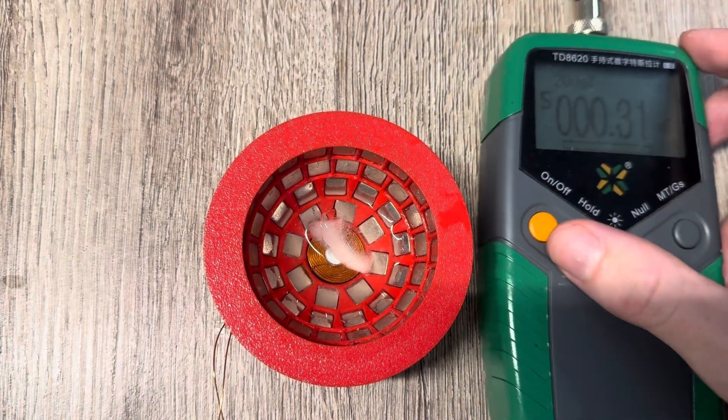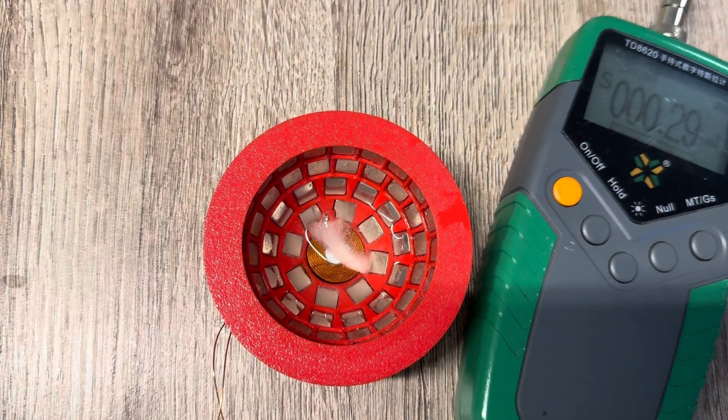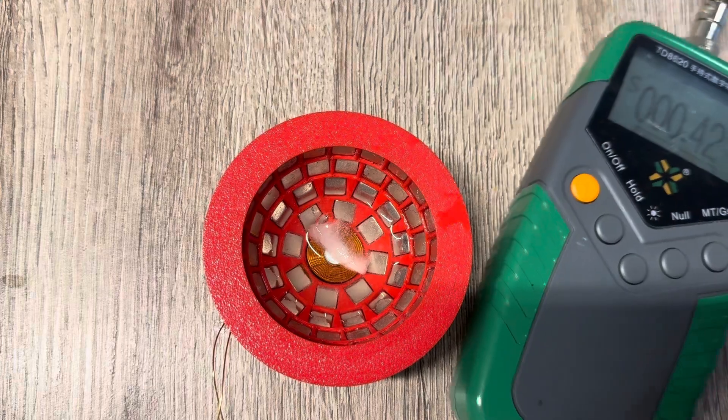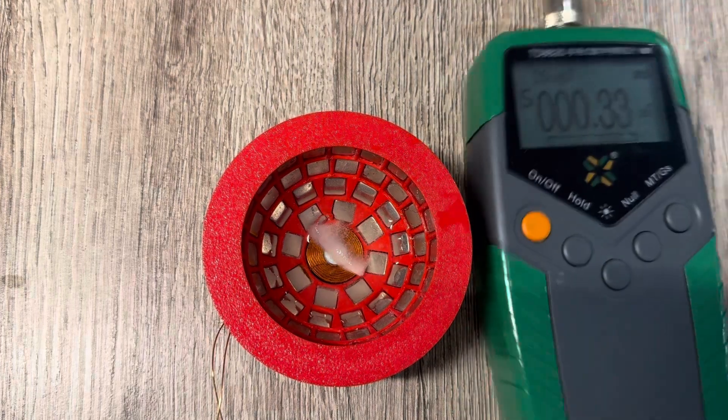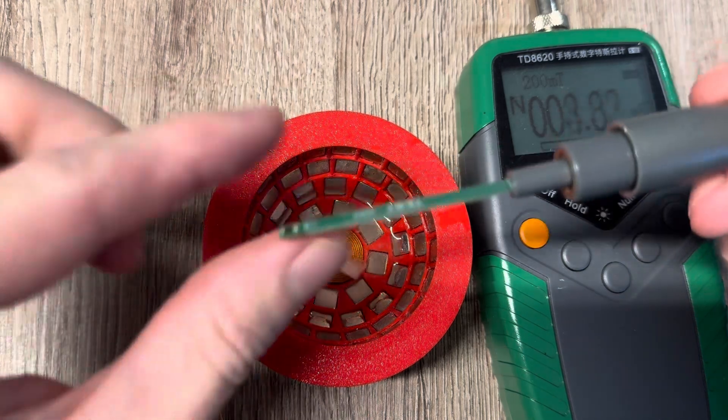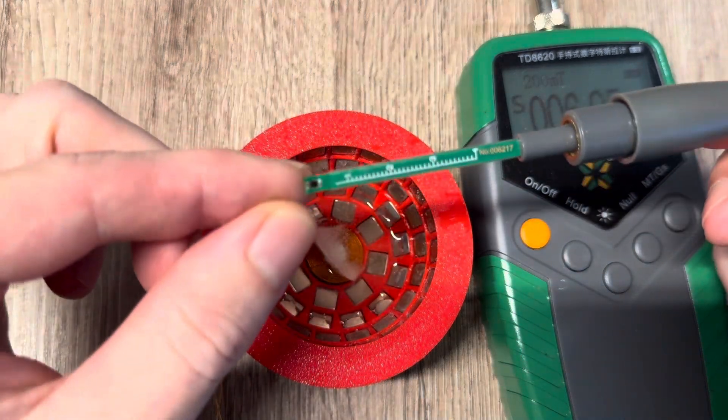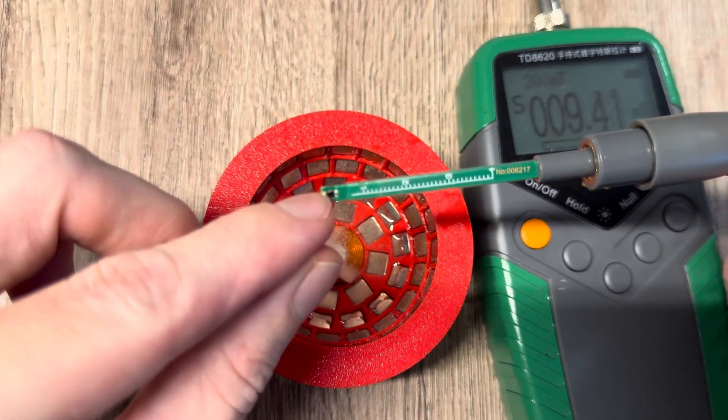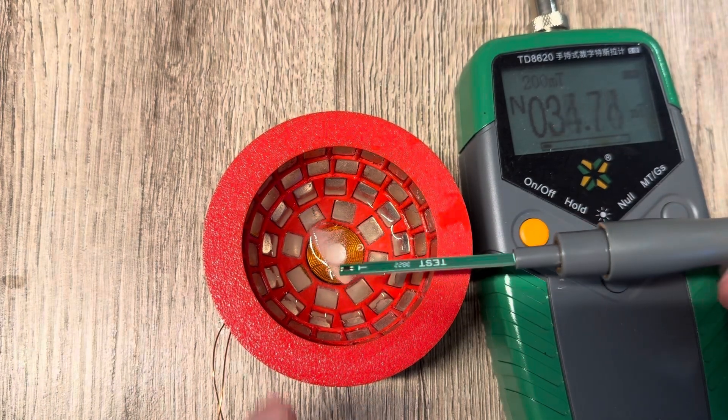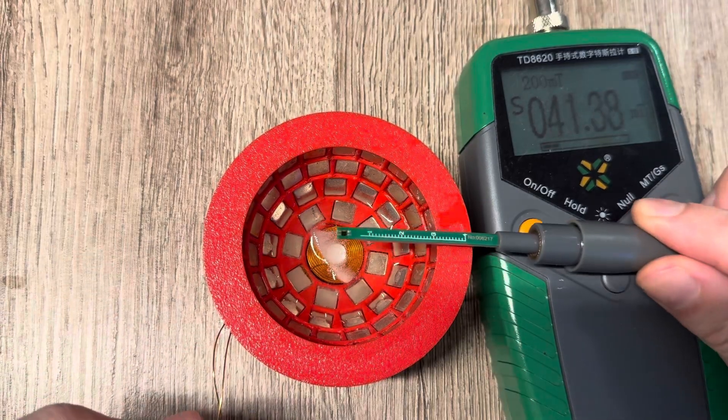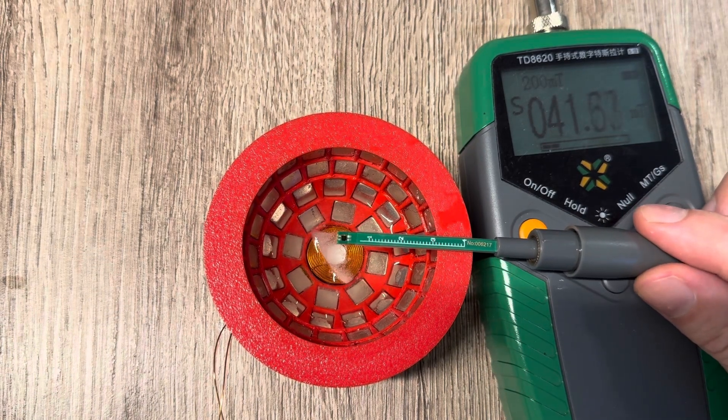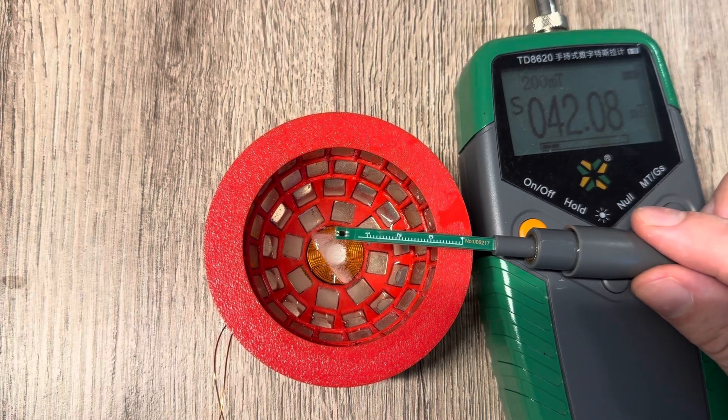I can show you this even better with just the gauss meter. I'll bring that into the camera, hopefully you can see that quite well. I reset it and here I have my probe. This little black small dot here is the actual probe.